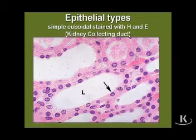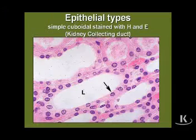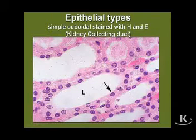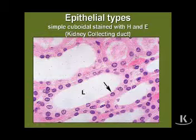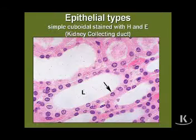The first example is simple cuboidal epithelium, which is highly characteristic of the tubules that make up the kidney. This particular view shows a collecting duct with a classic cuboidal epithelium and fairly well-recognized cell boundaries that constitute the lining epithelium.